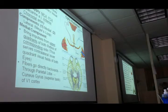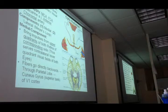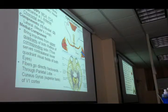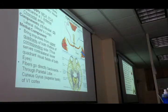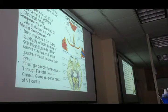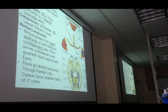Next is the lateral geniculate body, LGB. The lateral geniculate body is part of the thalamus and has six layers. From the lateral geniculate body, the synapse occurs and the fourth order of neurons starts. So the LGB is where the ganglion cell axon synapses. The visual system has four orders of neurons, and the fourth order starts from the LGB.